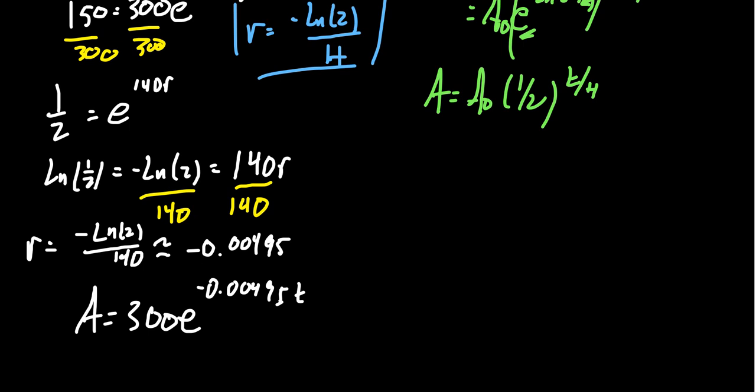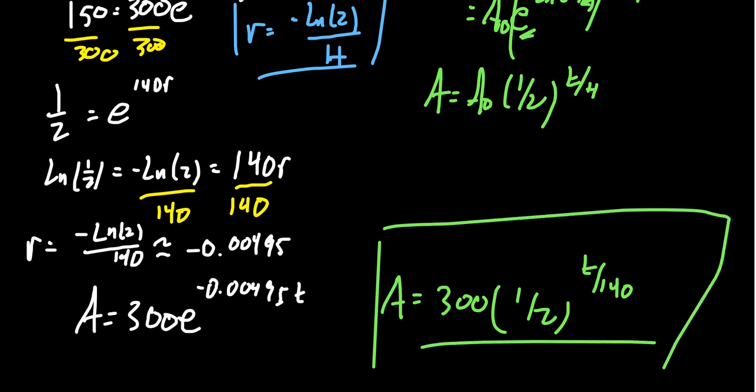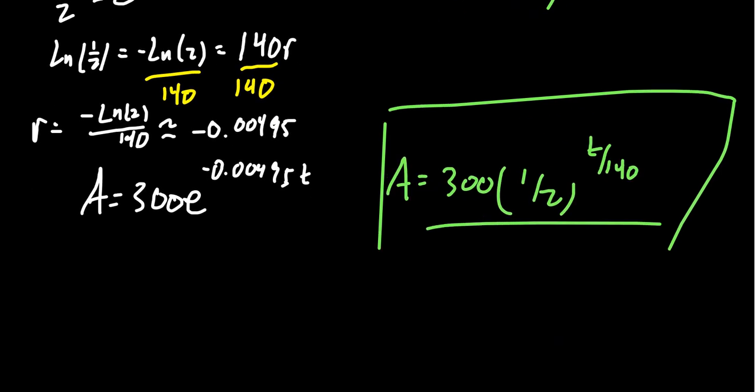We have the formula. I'm going to approximate negative ln(2) over 140, that'll give you negative 0.00495. Which gives you the formula A equals 300 milligrams times e to the negative 0.00495t. You do want your growth rate to be negative because that suggests you're decaying over time. Alternatively, we can use A equals 300 times one-half to the t over 140 power.